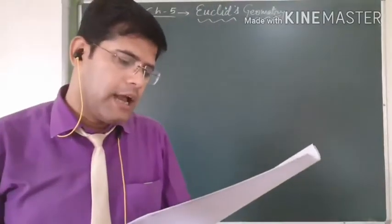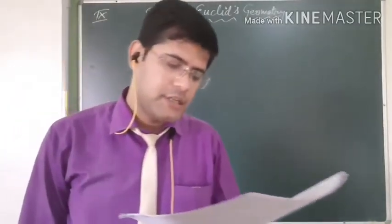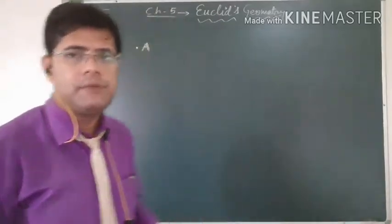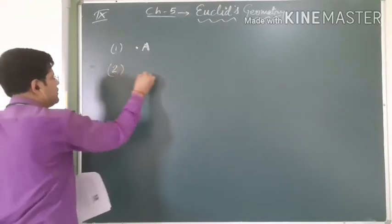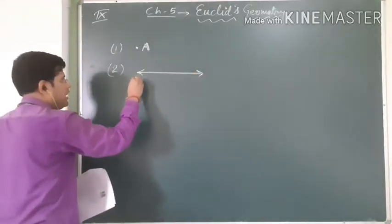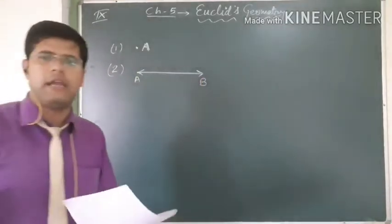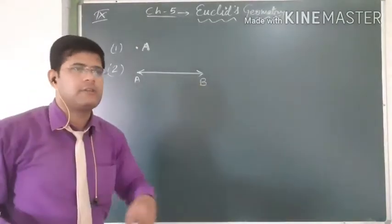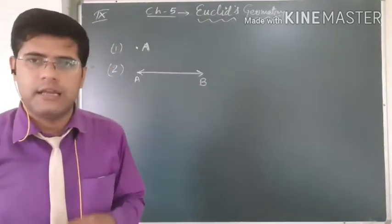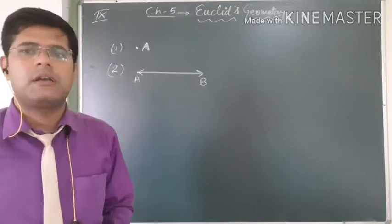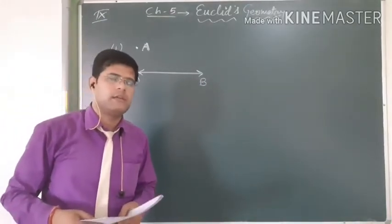A line has breadthless length. The second definition tells us a line has breadthless length. If we talk about line AB, it has only length, not breadth, because it is not an area. If anything is represented as area, we call it length and breadth. But a line has no area, so it has no breadth — it has only length.